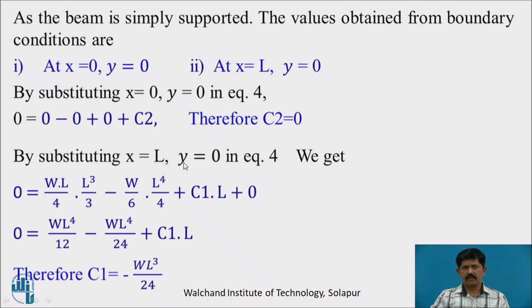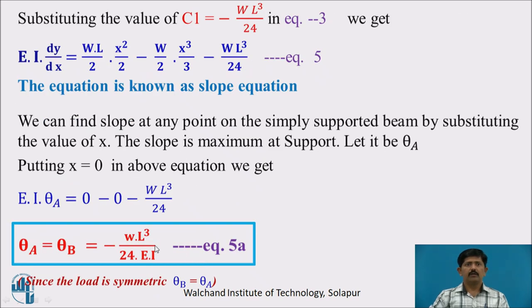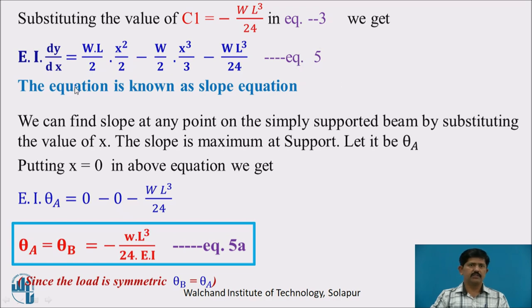Substituting x = L and y = 0 in Equation 4: 0 = WL/4·(L³/3) − W/6·(L⁴/4) + C1·L + 0, which simplifies to WL⁴/12 − WL⁴/24 + C1·L = 0. Solving, we get C1 = −WL³/24. Substituting C1 into Equation 3 gives EI·dy/dx = WL/2·(x²/2) − W/2·(x³/3) − WL³/24, which is Equation 5, the slope equation.